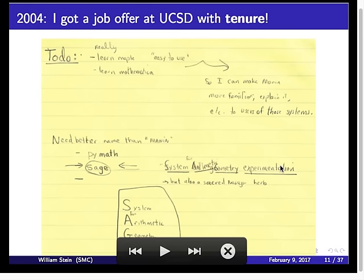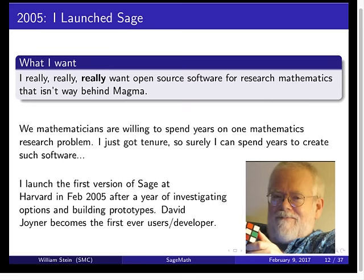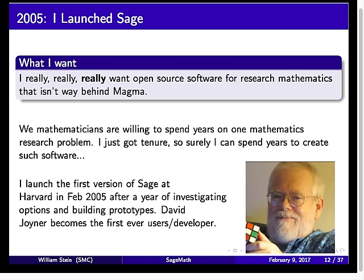I launched it, and initially I was the only user. Then two other people tried to use it. One was David Cole, who I'd mentioned earlier. Then David Joyner — a mathematician at the U.S. Naval Academy and coding theorist who wrote a really nice book on Rubik's Cube — started using SAGE and contributing a lot of code. Being not an arithmetic geometer at all, he was contributing things involving undergrad differential equations and group theory. So very quickly, with developer number one after me, the scope of what SAGE would be became much broader than just the number theory I'm interested in.